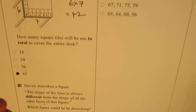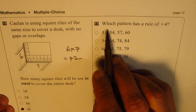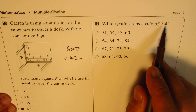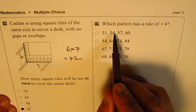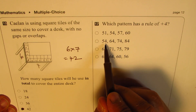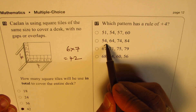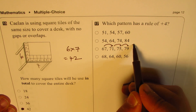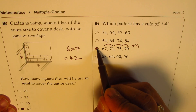Question number 17: which pattern has the rule of plus 4? We add by 4 each time. Looking at the options, the pattern starting with 3 and going to 10 — yes, that is plus 4, which is correct. So that becomes the right option for us.